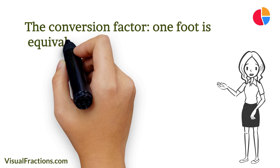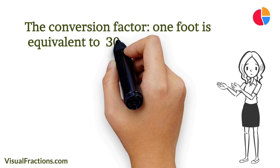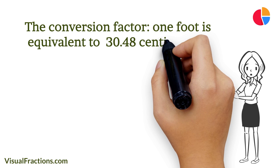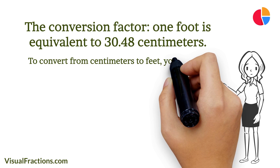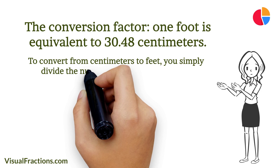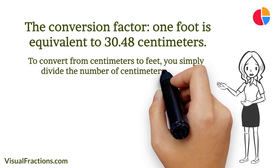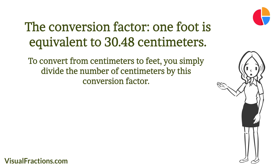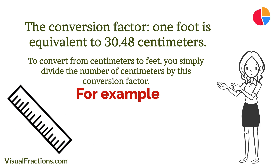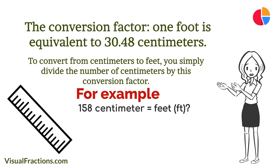One foot is equivalent to 30.48 centimeters. To convert from centimeters to feet, you simply divide the number of centimeters by this conversion factor. Now let's dive into an example — suppose we want to convert a length of 158 centimeters to feet.